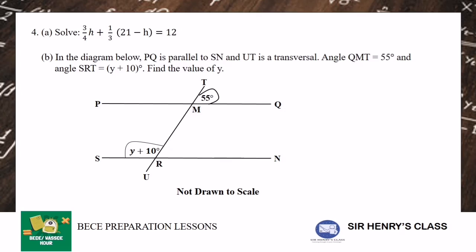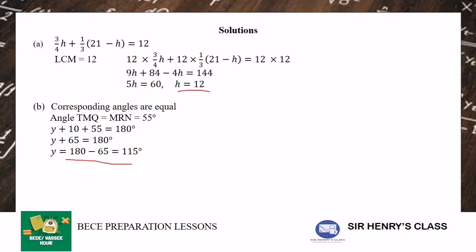And in the diagram below, PKO is parallel to SN and UT is a transversal. Angle QMT is 55 and SRT is y plus 10. You find the value of y. So here to pause, try your hands-on. The solution is here. When you are done, you can correspond to see if you relate to your answer.